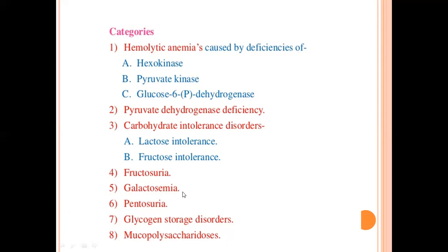Number 5 is Galactosemia — galactose in the blood. Due to the deficiency of the galactase enzyme, the digestion of galactose becomes improper, and galactose accumulates in the blood. Number 6 is Pentosuria — pentose sugar in the urine. This is due to the accumulation of xylitol, caused by a deficiency of the enzyme L-xylulose reductase.